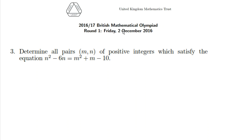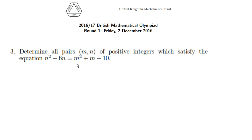2016-17 British Mathematical Olympiad, United Kingdom Mathematics Trust, Problem number 3, Round 1. The logo is for UKMT. Determine all pairs M and N of positive integers which satisfy the equation N squared minus 6M equals M squared plus M minus 10.